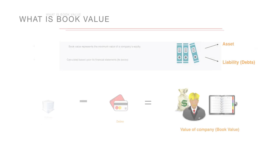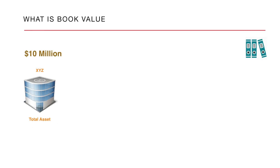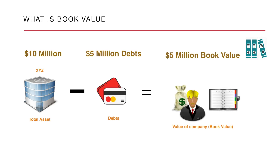For example, there is a XYZ company and its financial statements show assets worth of 10 million and liabilities of 5 million, and the book value is 5 million. If XYZ company liquidates and pays off all its debts, the shareholders would have 5 million in equity to divide among themselves.